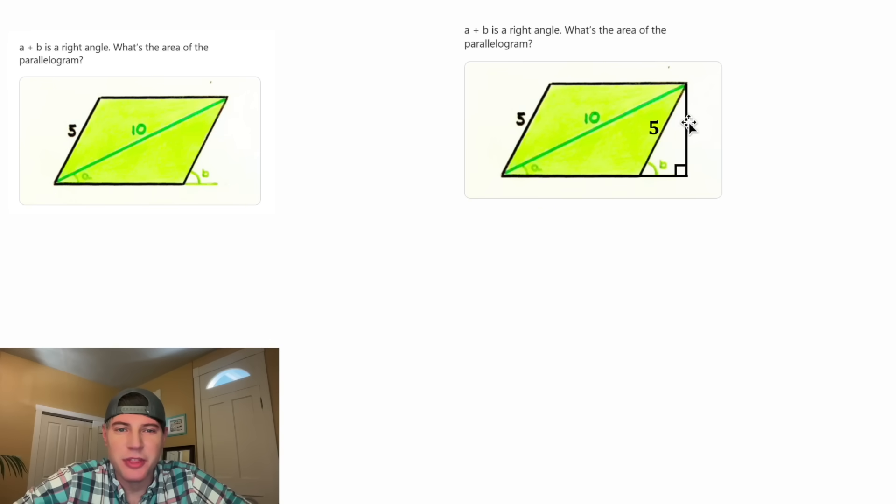And then we also know this angle up here. We're given that A plus B is a right angle, or in other words, they add up to 90 degrees. The acute angles in a right triangle also add up to 90 degrees. Since this angle is equal to B, this angle has to be equal to A. And then we can label the base of our triangle X and the height of the triangle Y.